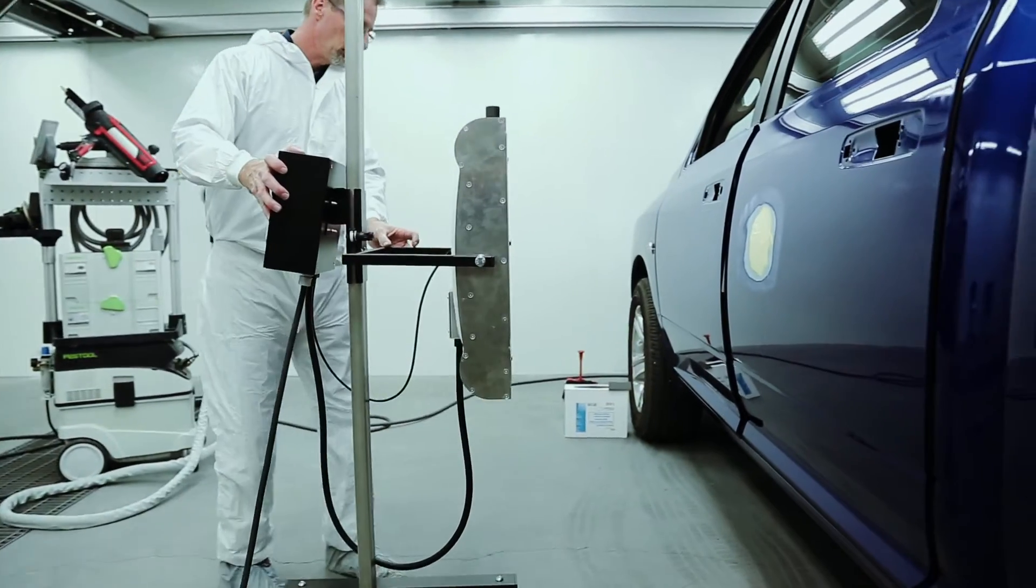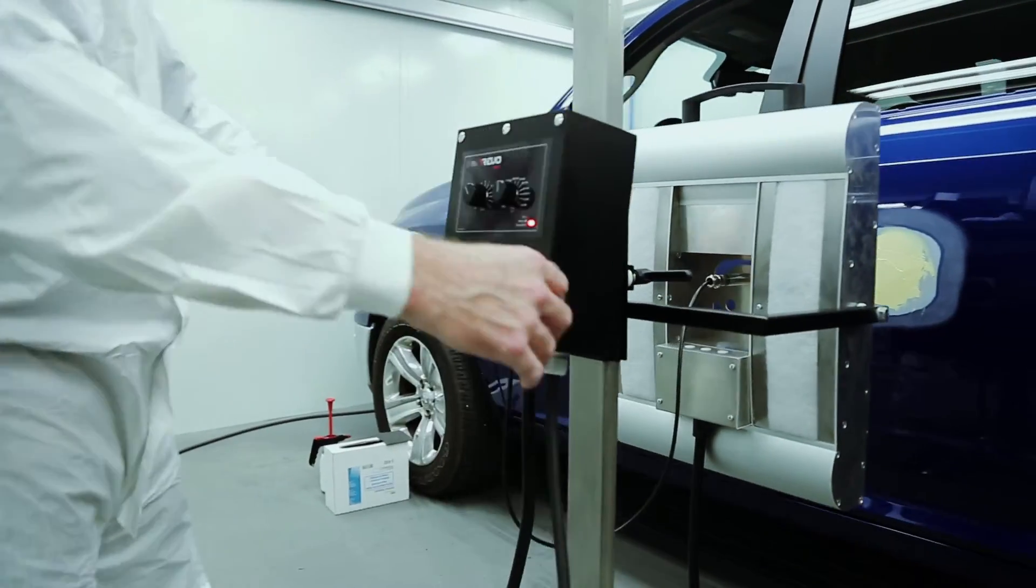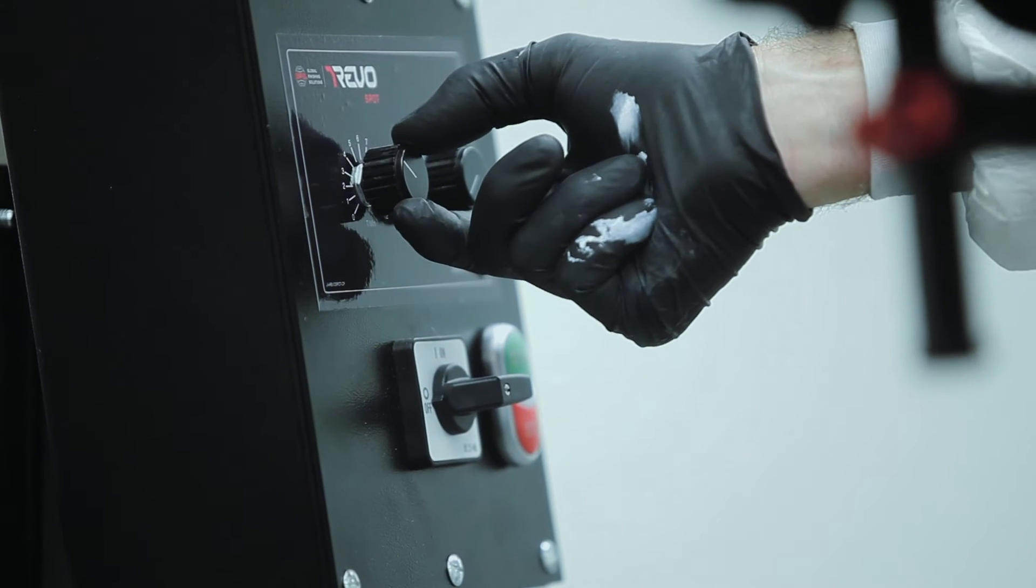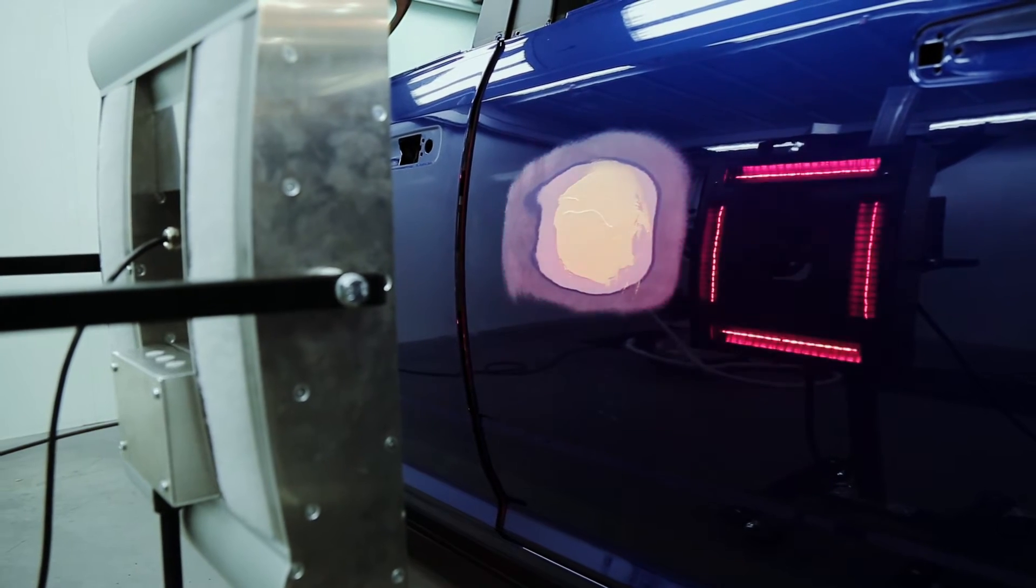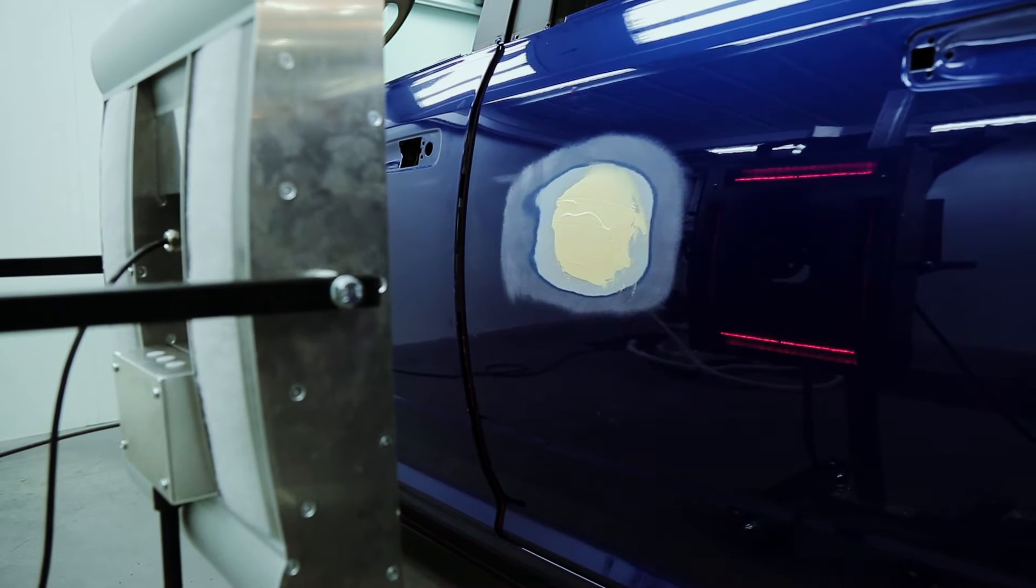For this project, place the lamp two feet away from the surface you're curing. Turn the system on, select the temperature, and set the curing time. You'll notice that these bulbs flash to control and maintain temperature.